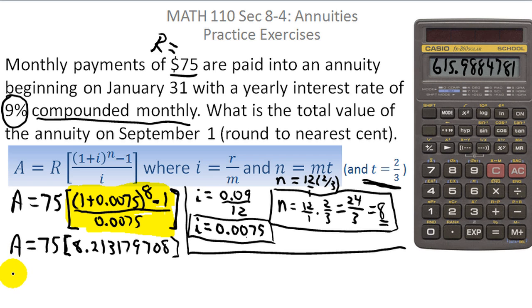So the final result for A in the display now would be 615.9884781. They're asking us to round this to the nearest cent. Well, the cent is this first eight. So you look at the next digit, which is an eight, which means that the first eight rounds up to a nine. So to the nearest cent, it would be $615.99.